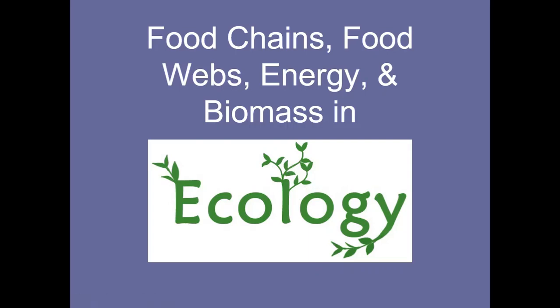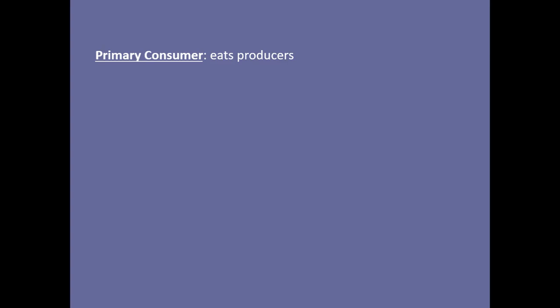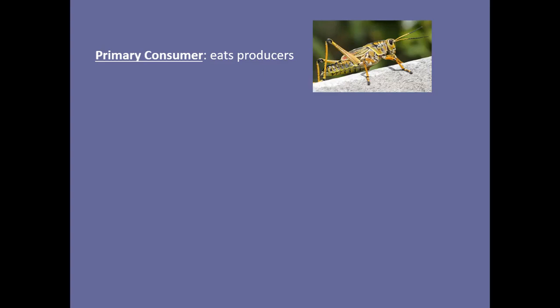Let's talk about food chains, food webs and energy, plus the biomass in ecology. Energy flows in different ways through the ecosystem. First, you have to know what a primary consumer is. Primary consumers eat producers. Producers are the plants. So as you can see, the grasshopper only eats plants, so it's a primary consumer.